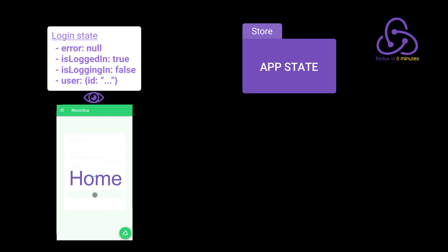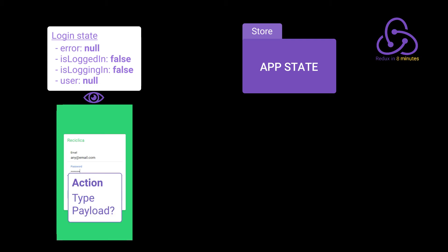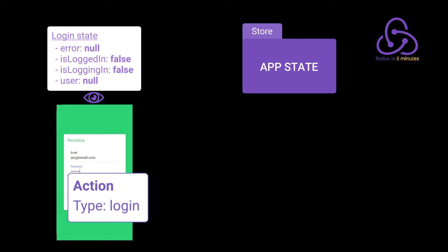This is the idea of Redux and state management, but in the Redux world there are some specific steps involved that I'll show now. When the user clicks the login button, that fires an event. In the Redux world, instead of an event we have something called an action. This action is what informs the store that something happened and that the store needs to change. Every action has a type and it can have a payload. The type describes what kind of action is happening, and the payload is some information sent with that action. In our case the action has the type 'logging' and we don't need any payload for now.